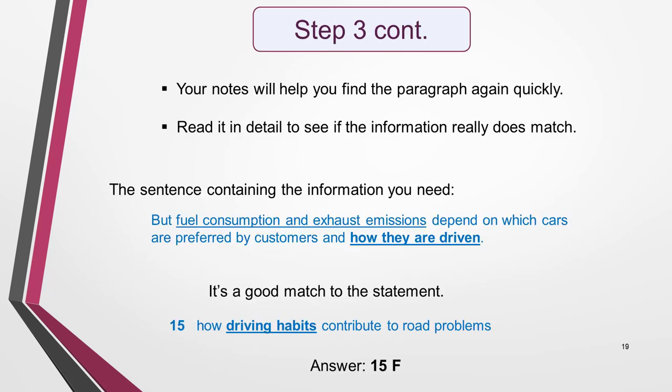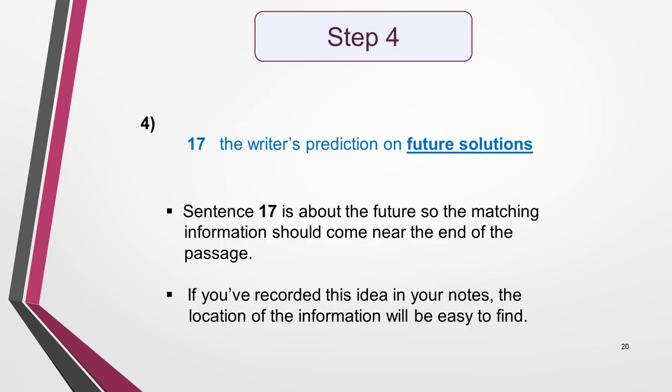Because of my notes I find the paragraph quickly and read it in detail. I identify this sentence: 'But fuel consumption and exhaust emissions depend on which cars are preferred by customers and how they are driven.' The information is a good match, so I fill in the answer — 15F — cross through the statement, and move on. I decide to try statement 17 next: the writer's prediction on future solutions. I choose this because it's about the future, so I expect the matching information to come near the end of the text.